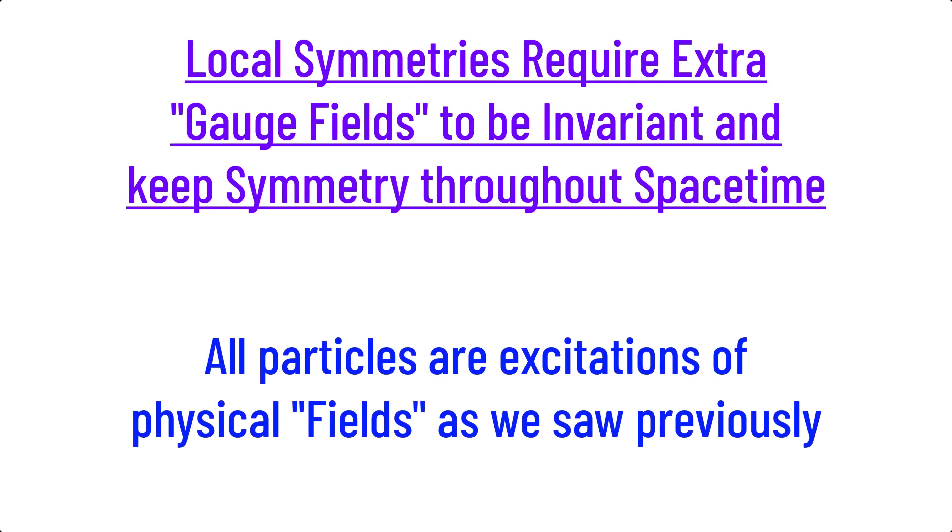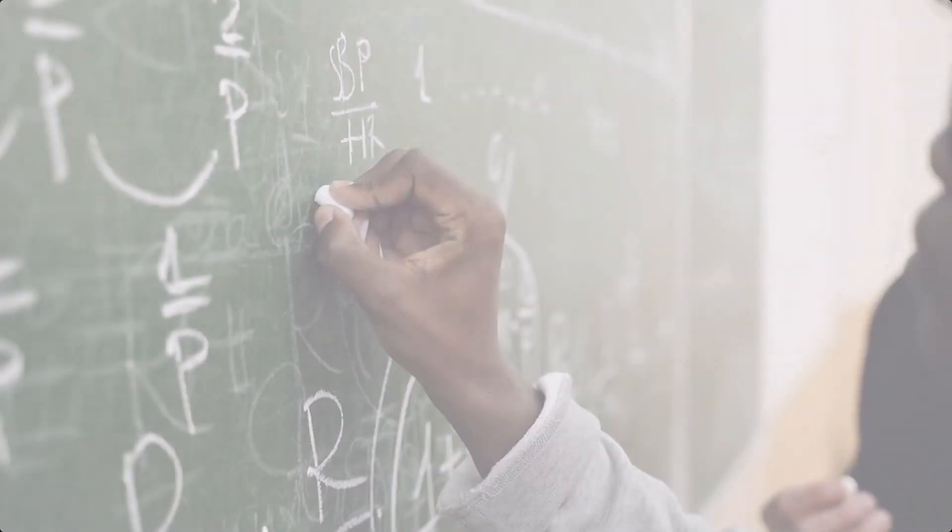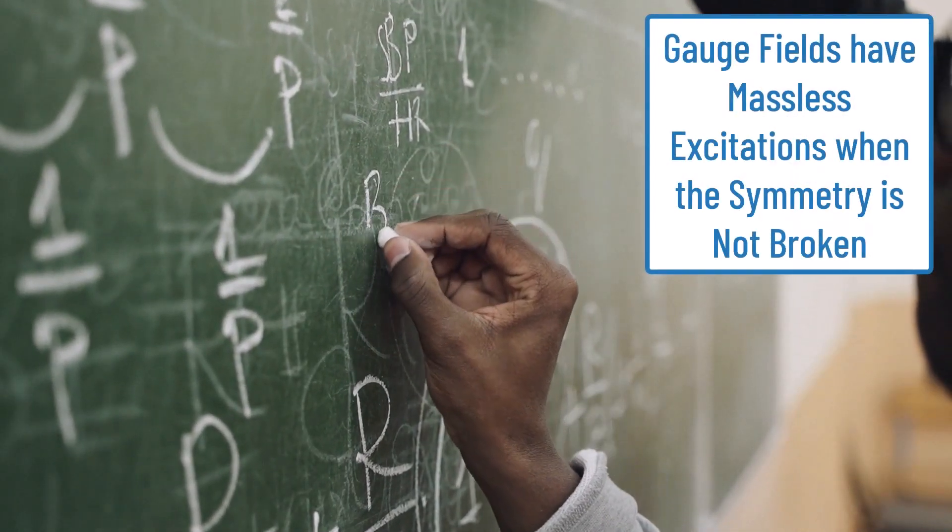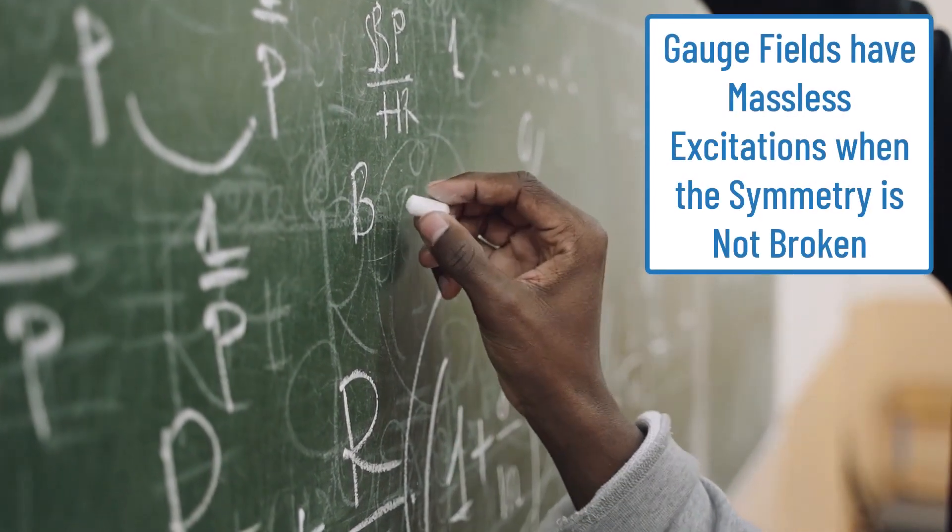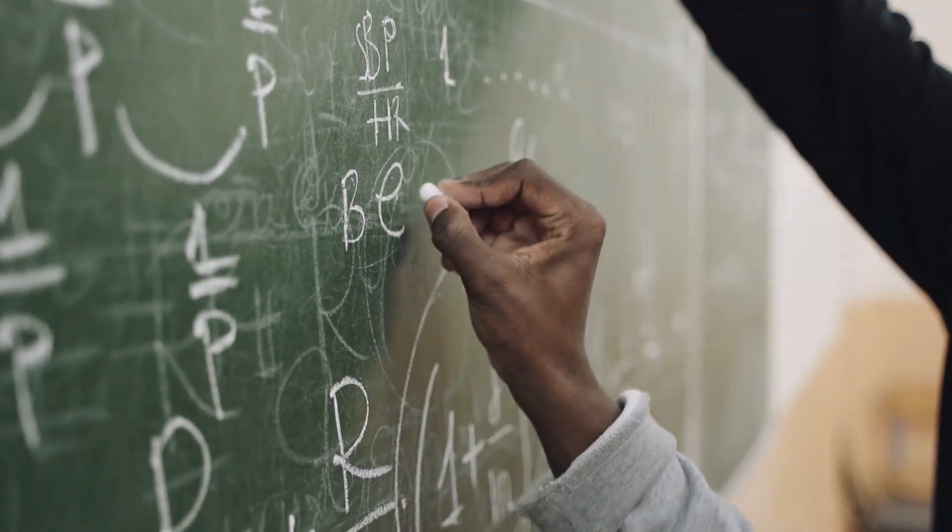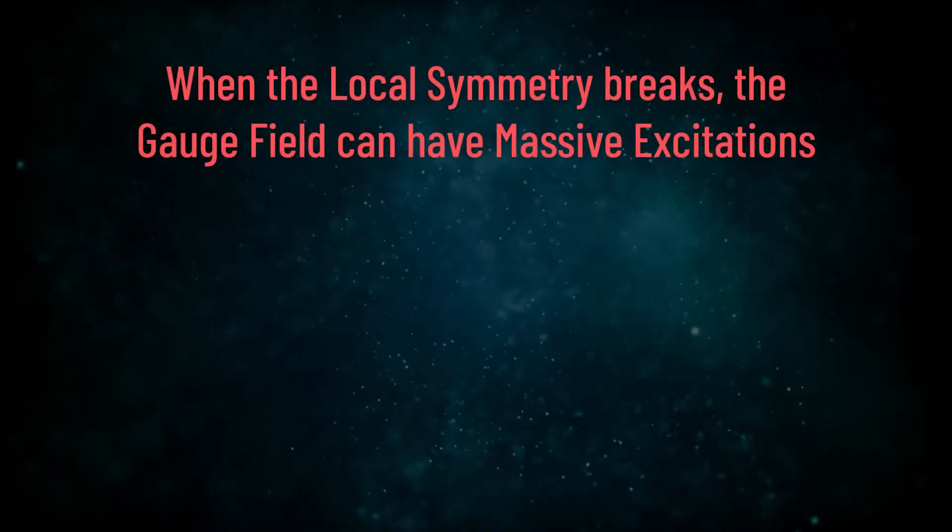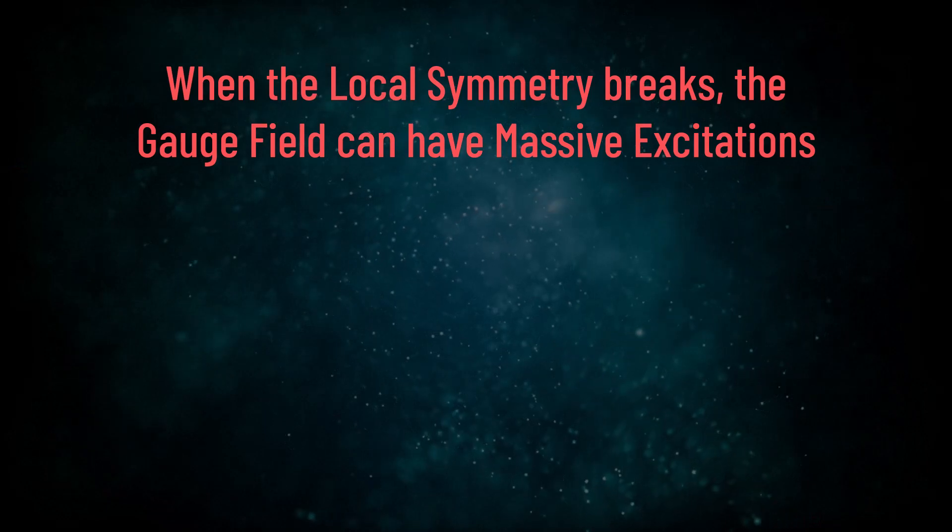One final minute detail worth mentioning before discussing what this has to do with the early universe is that of local symmetries. These are symmetries like the magnetic ordering, which require an additional field known as a gauge field to keep their symmetry throughout spacetime. Without spending the next hour going through the math of gauge fields, it's important to know that they must have massless excitations, otherwise the local symmetry would be broken to begin with. When the local symmetry does spontaneously break, like with the ferromagnetic phase, the excitations of the gauge field become massive, since the local symmetry has now been broken. So it's fine for the gauge field to have massive particles, which further breaks the symmetry.